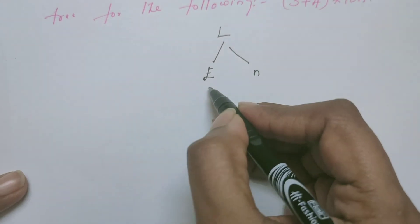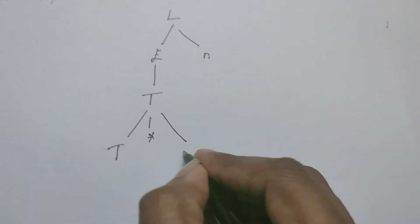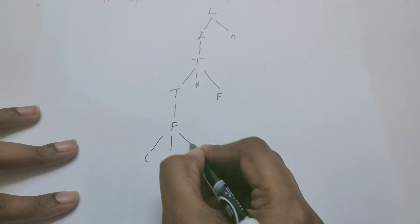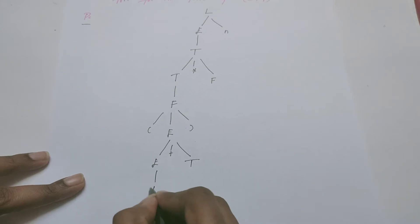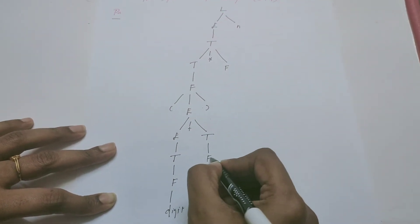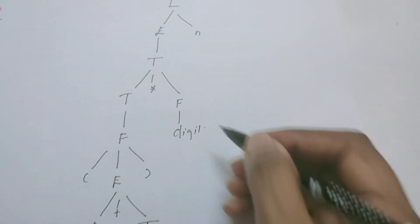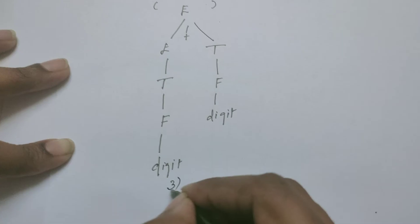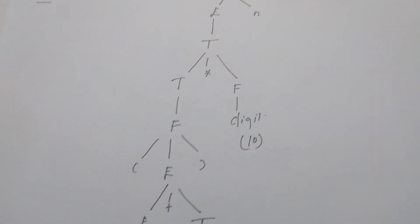L can be expanded as E, then E can be replaced by T, T can be replaced by T * F, this T is replaced by F, and F is replaced by E with parentheses. This E can be replaced by E + T, then further this E can be replaced by E + T. This E is replaced by T, this T is replaced by F, and F is replaced by digit (which is 3). Similarly this T is replaced by F, F is replaced by digit (which is 4). This F is replaced by digit (which is 10). So we have drawn the parse tree for the given expression.